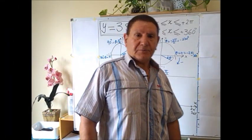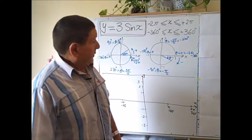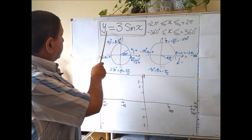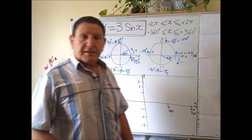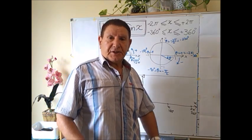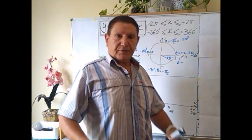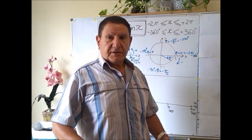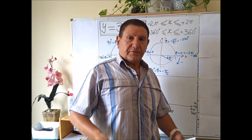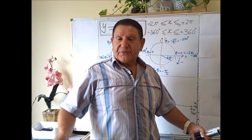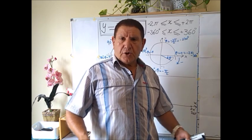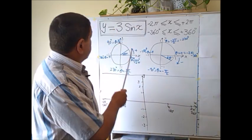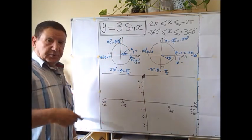Hi folks and welcome to Math and Physics for You. In this video we're going to plot the graph of the function y = 3 sin(x). This is an example of a trigonometric function, a periodic function, that is a wave function — it's a function that repeats itself. Examples include sea waves, electromagnetic waves, and so on in physics and engineering.